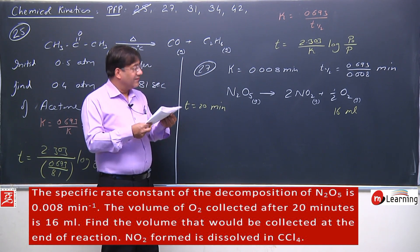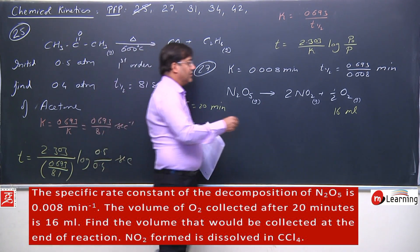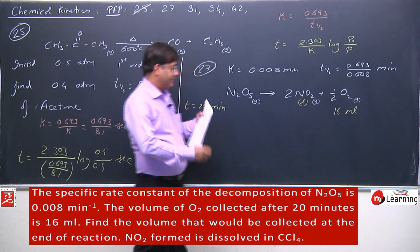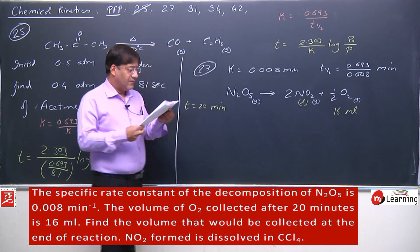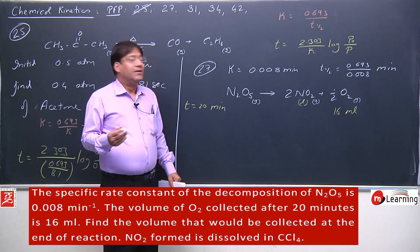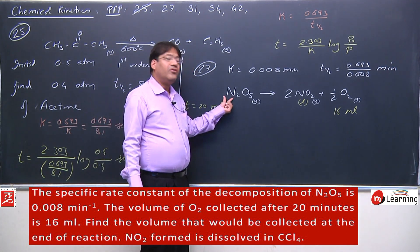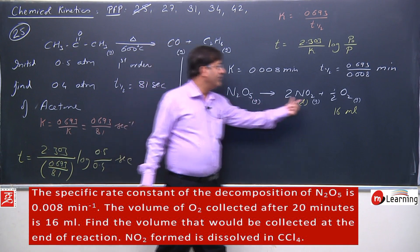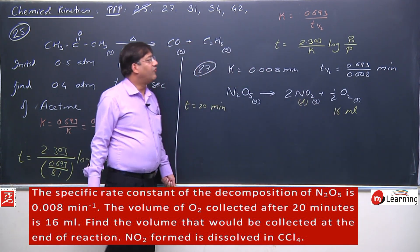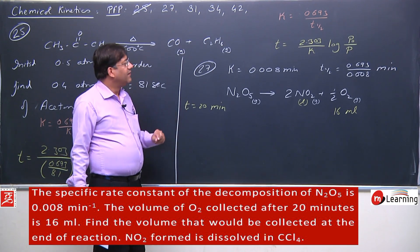NO2 formed is dissolved in CCl4, meaning it is converted to liquid form. From the reaction stoichiometry, 1 ml of N2O5 would give half ml of oxygen. Now we apply the integrated rate law here.